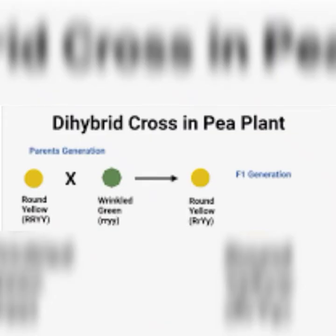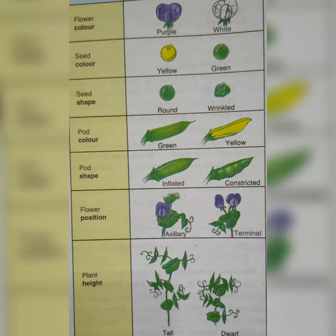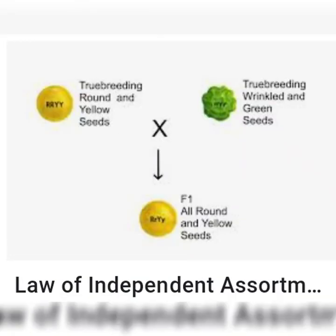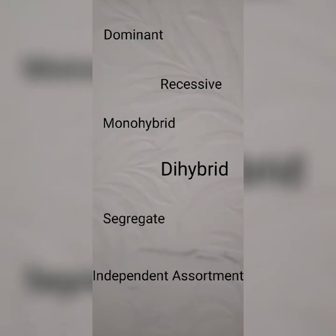The other term is Di-Hybrid, which involves two pairs of contrasting characters, such as the height and colour of the flower, or the shape of seeds and their colour. The term Segregate means Separate. Then there is Independent Assortment, which means that the characters are not dependent on each other for the distribution of the pair.